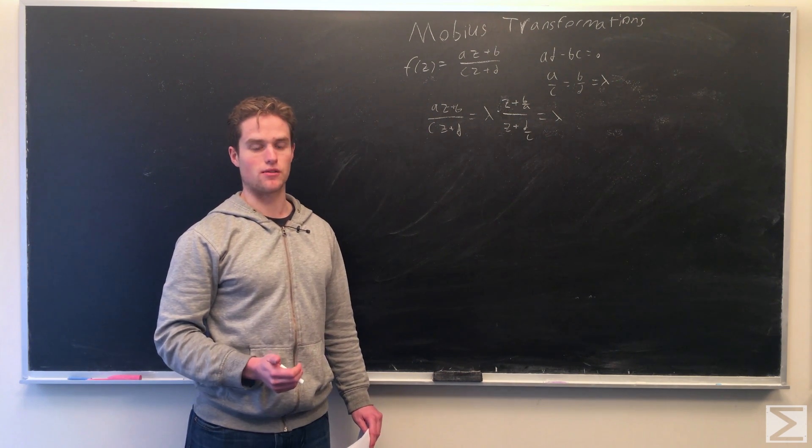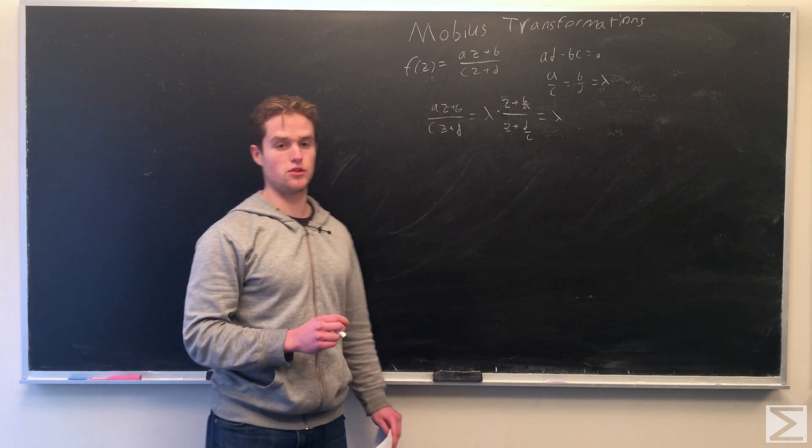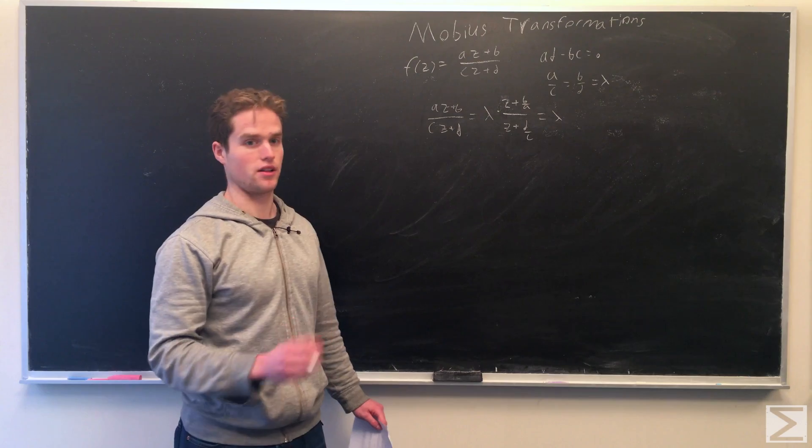So if ad minus bc equals 0, our function is just the constant one. So we're going to assume ad minus bc does not equal 0.